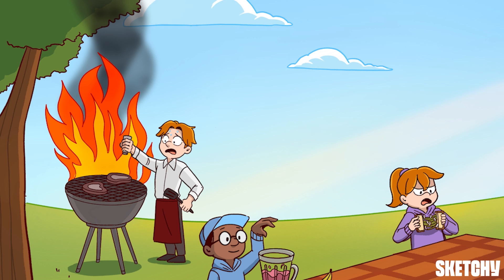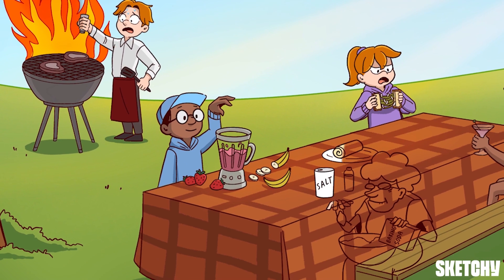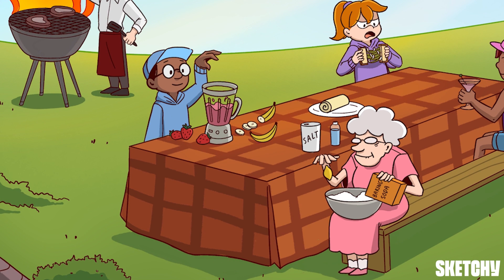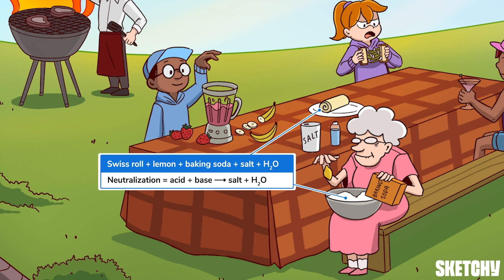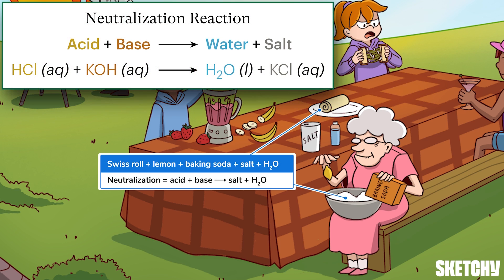Is he sweaty from the flames or from the pressure of trying to impress his in-laws? Auntie Agnes just may be the perfect person to teach that lesson with her famous no-bake Swiss rolls. One bite out of those bad boys will make you wish that Swiss neutrality applied to your taste buds. She makes her rolls by mixing an acidic lemon with basic baking soda, which represents a neutralization reaction — reactions between acids and bases that neutralize their activity and typically produce salts and water, hence the salt and water on the table next to Agnes.